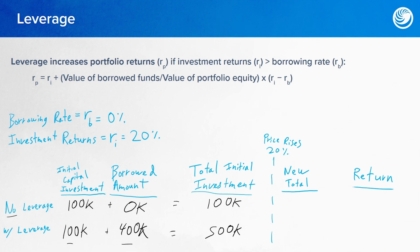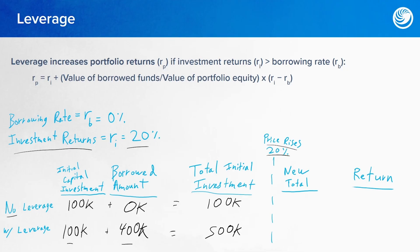Now let's say hypothetically that the price rises 20% — that is, the investment return rises by 20%. So what would be the new total? The no-leverage position would go up to $120,000, and the leveraged position would go up to $600,000. I'm just multiplying both of these values by 1.2.